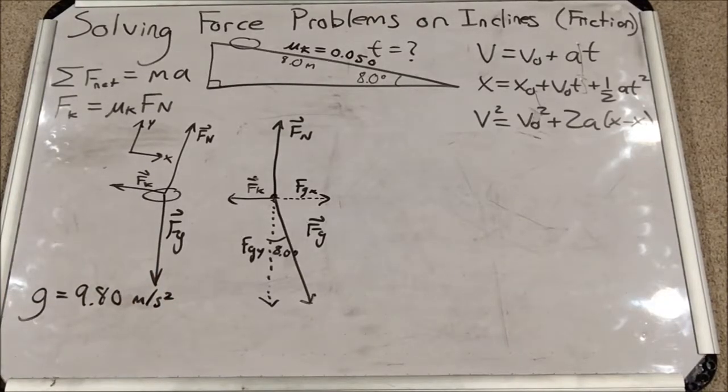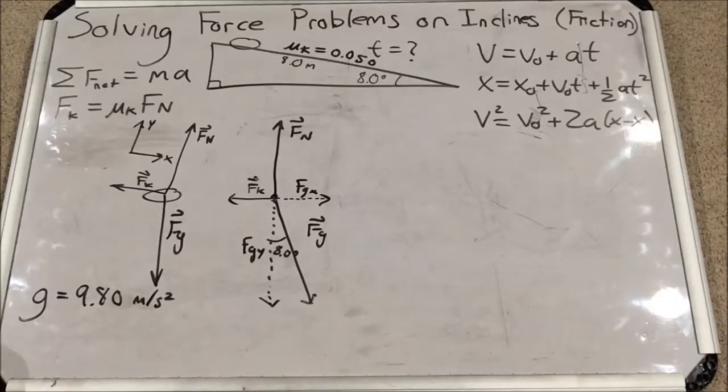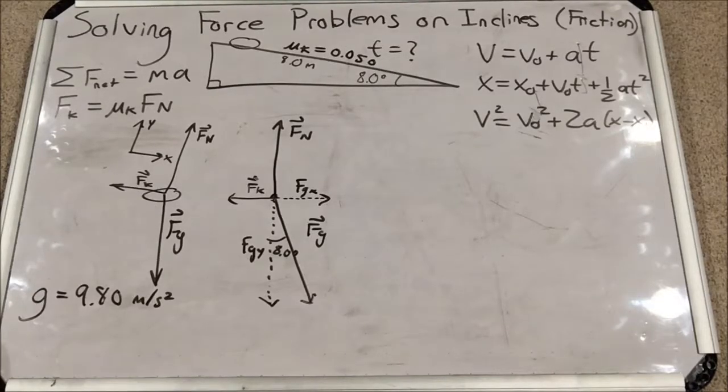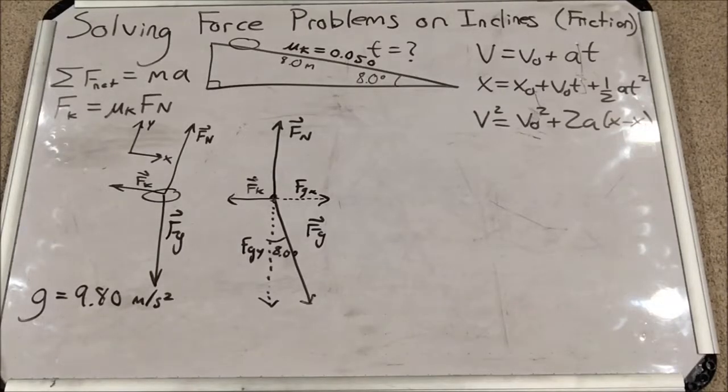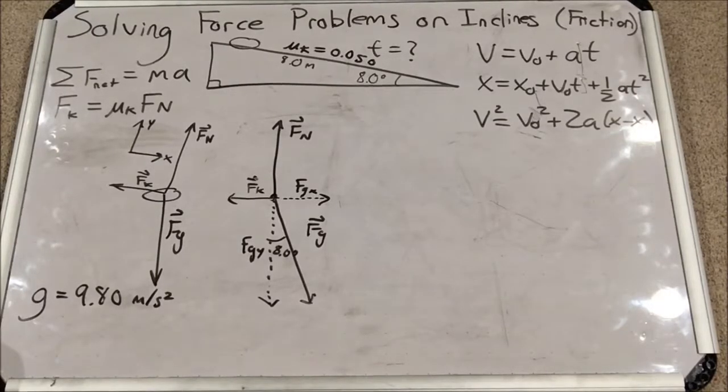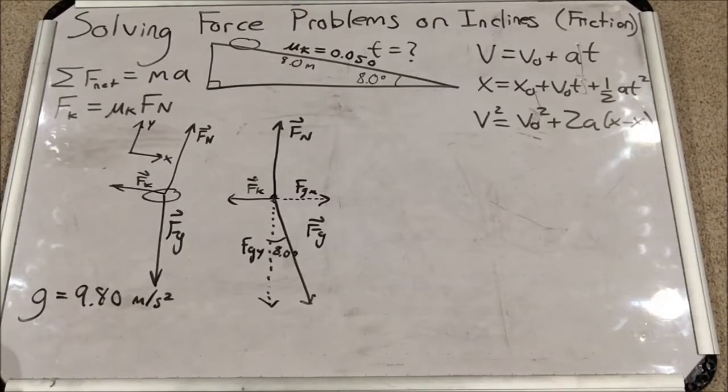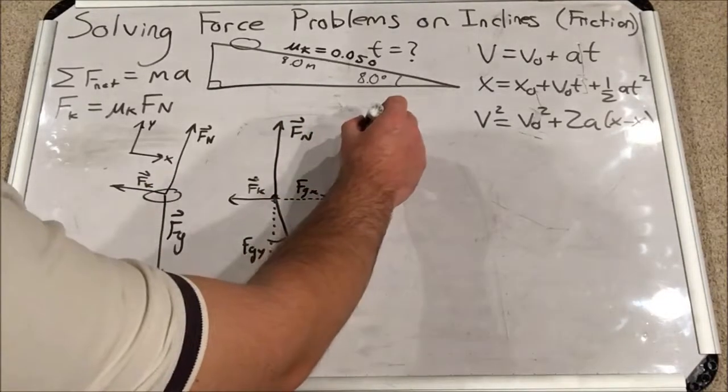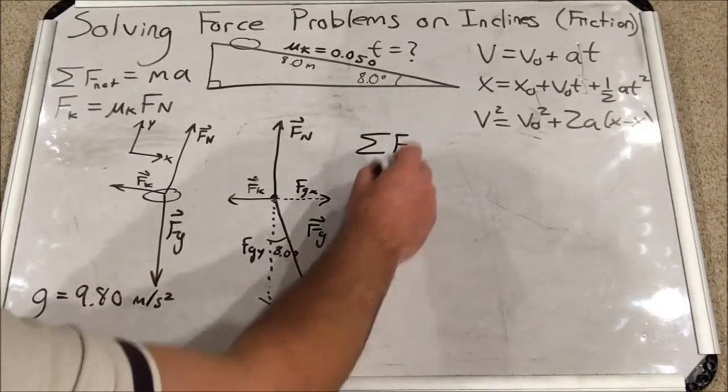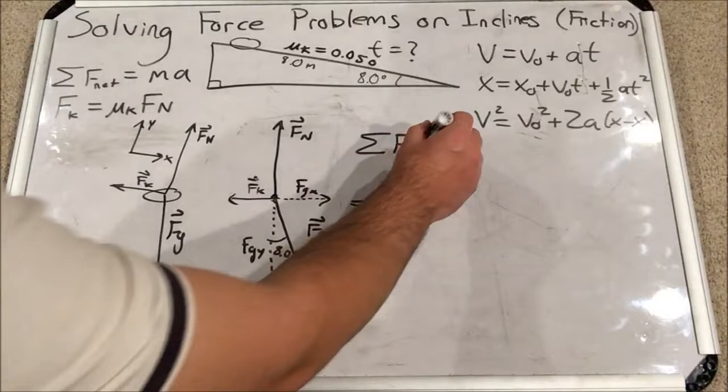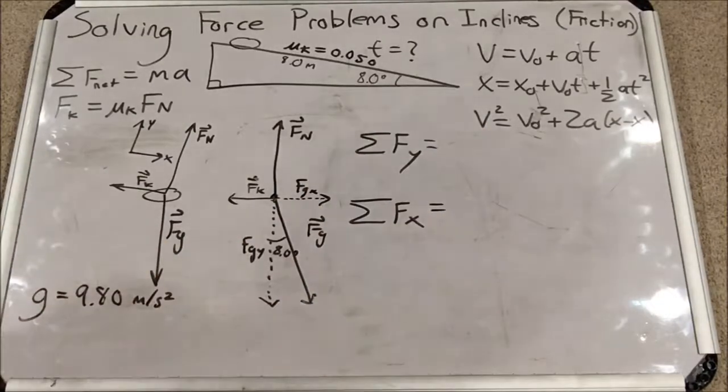Now, why did we do this? Well, remember, we need to find time. We're going to have to, since this is a force problem on inclines, get to time by using Newton's second law. The force sum equals mass times acceleration. We can actually split this up into two equations, one for the y direction and one for the x direction and everything is in components except for the mass. So I could set up an equation for the sum of forces in the y direction. I'm going to leave some space here and I could set up a sum of forces in the x direction.